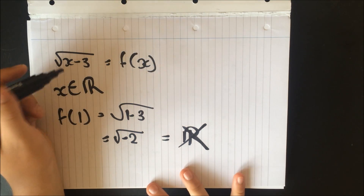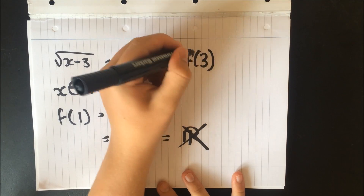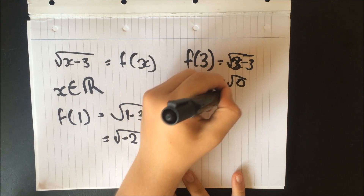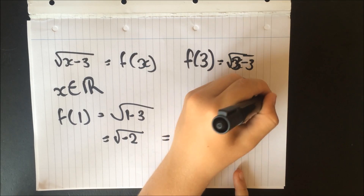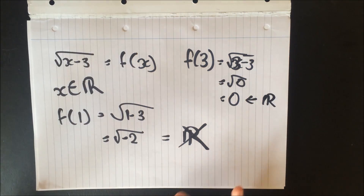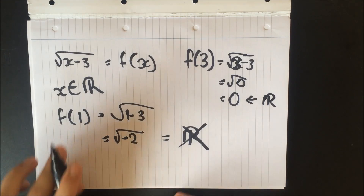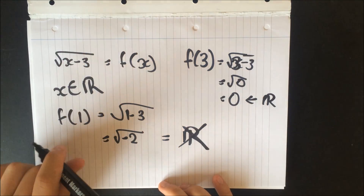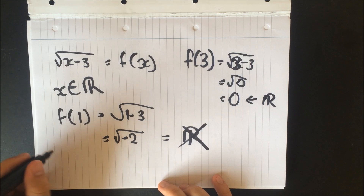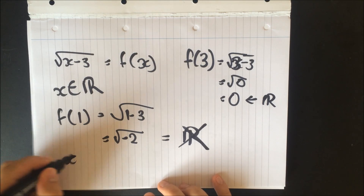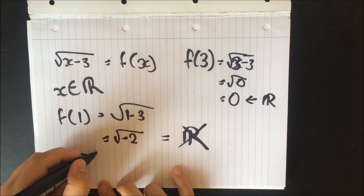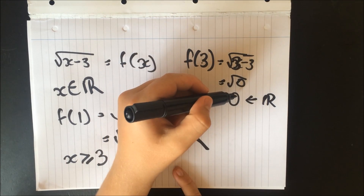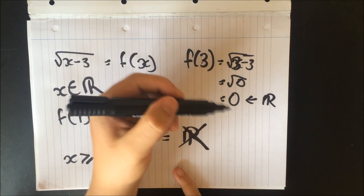So if f was 3, we do the function of 3 — it gives 3 minus 3, which is the square root of 0, which is 0. That is a real number. So basically, if f was to be below 3, it wouldn't give a real number. Therefore, the greatest possible domain is x must be greater than or equal to 3, because 3 is the lowest possible value for x to give a real number as the output.